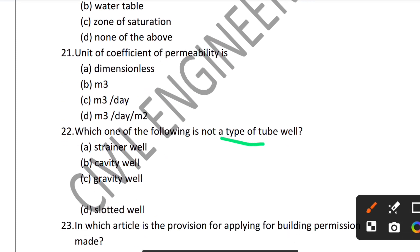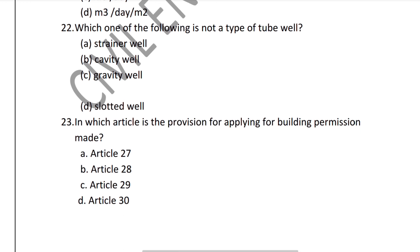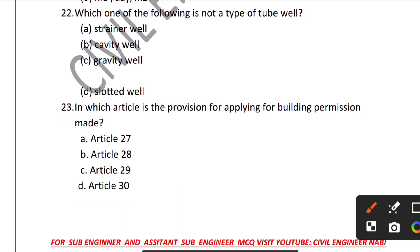Question 22: Which of the following is not a type of well? Options include cavity type, slow sand type, and gravity type. The correct answer identifies which one is not a type of well among those listed.